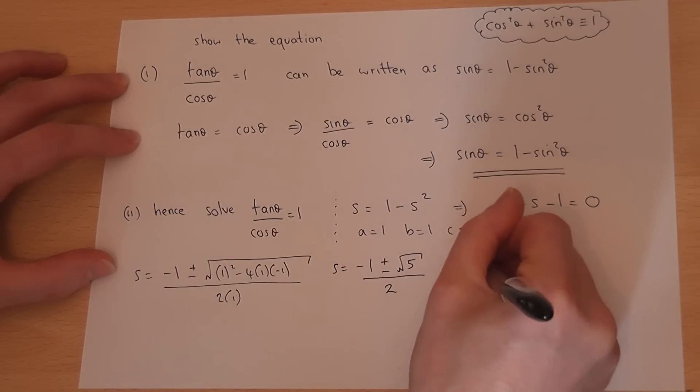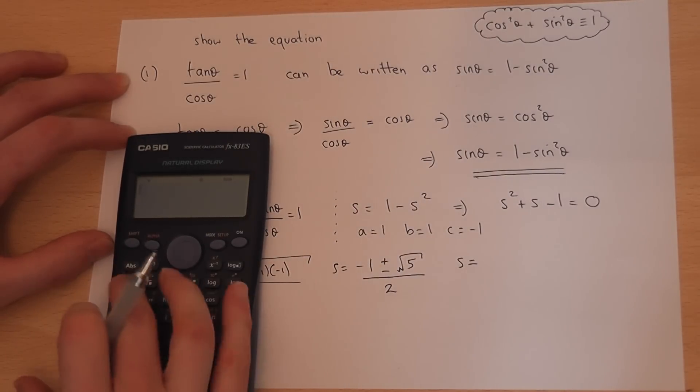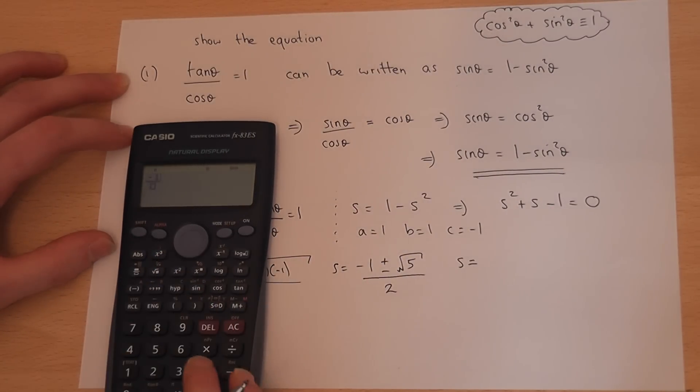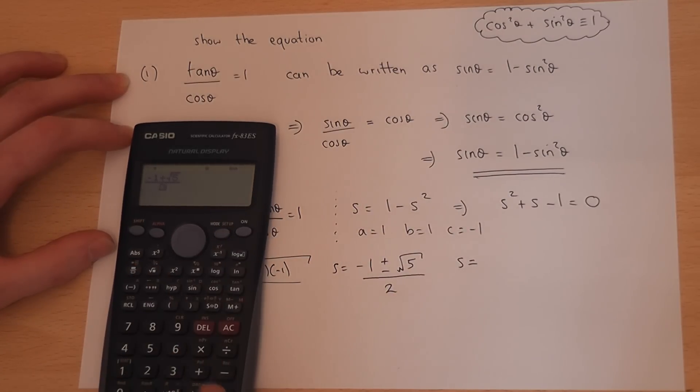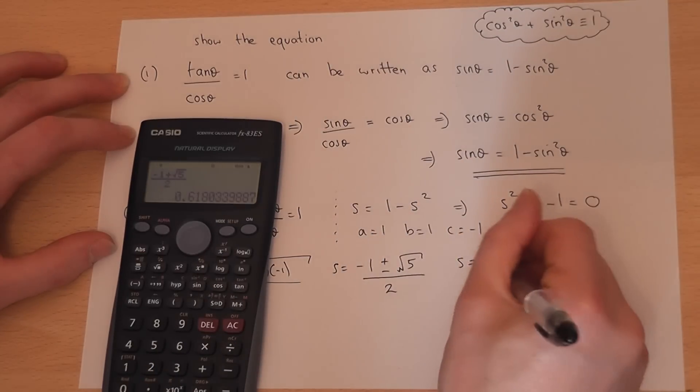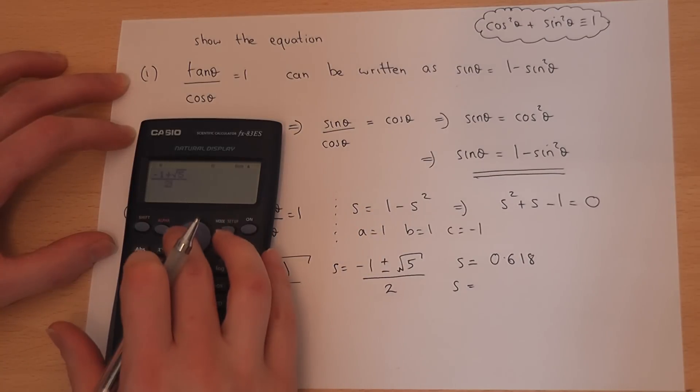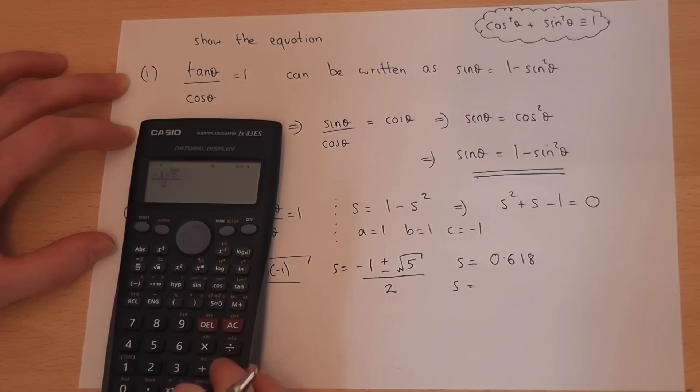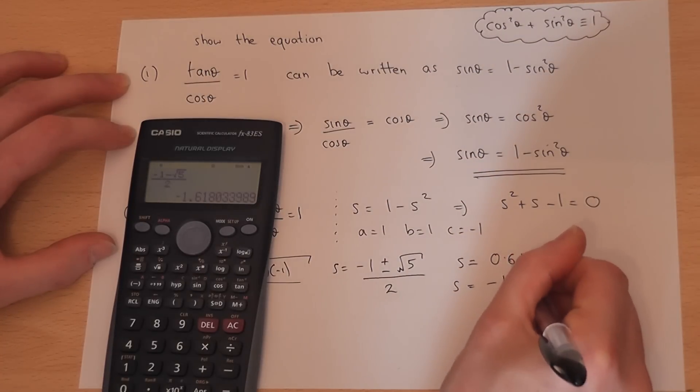So this gives me two options for s. I've got minus 1 plus root of 5 divided by 2. So one option is s equals 0.618. The other option is where I replace the plus root 5 by a minus root 5, and end up with minus 1.618.